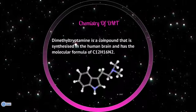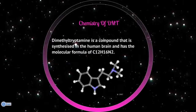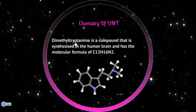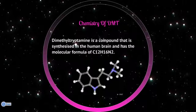DMT is a compound that is synthesized in the human brain and has a molecular formula of carbon-12, hydrogen-16, and nitrogen-2. Carbon, hydrogen, and nitrogen are some of the most common elements found in the human body.